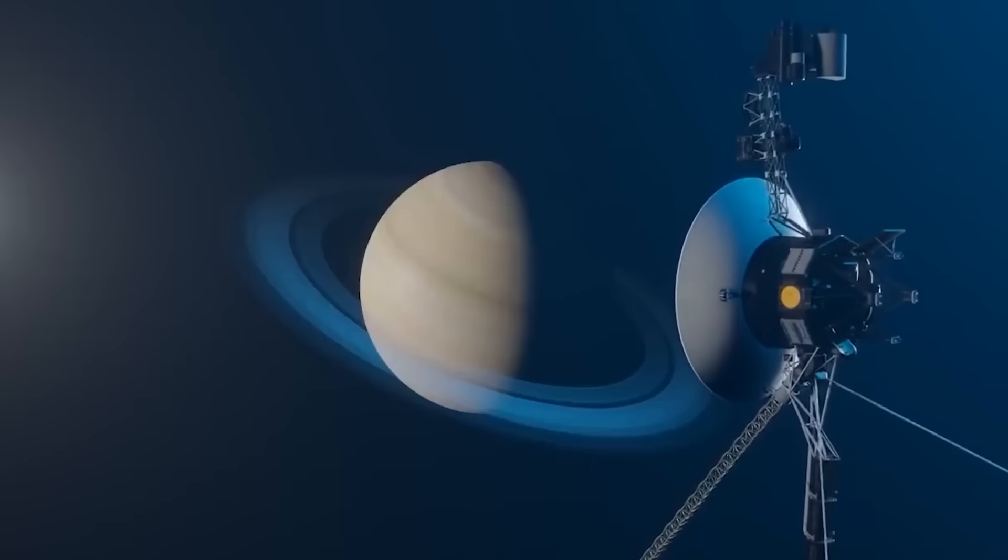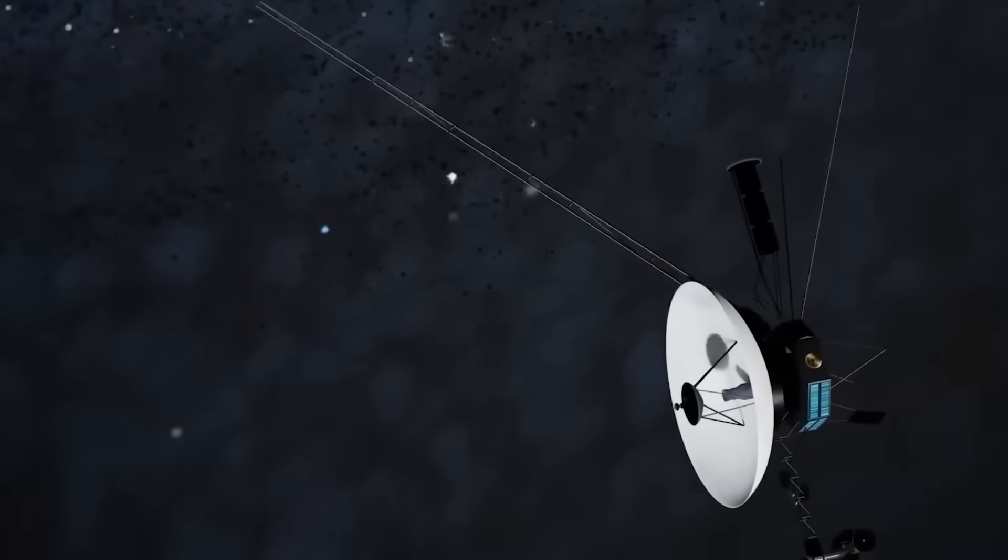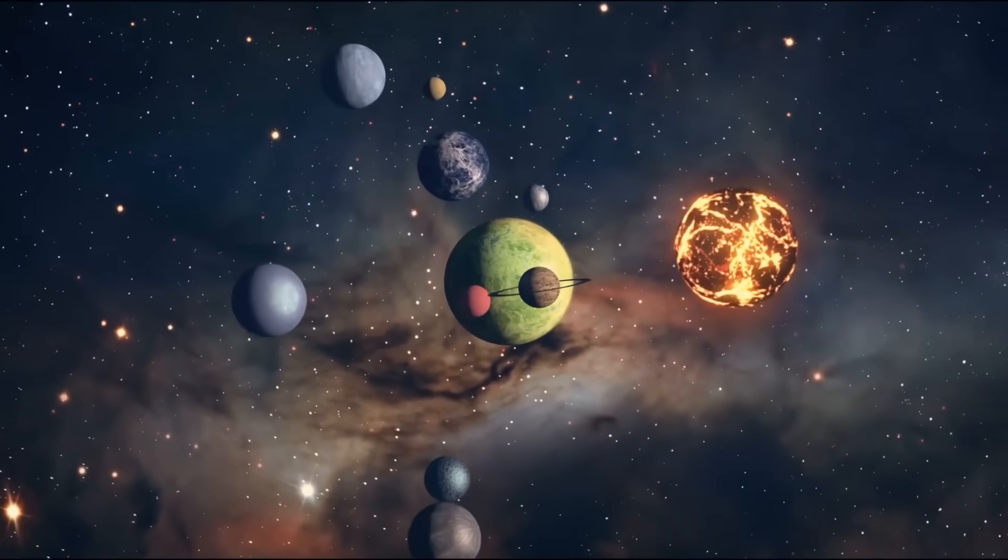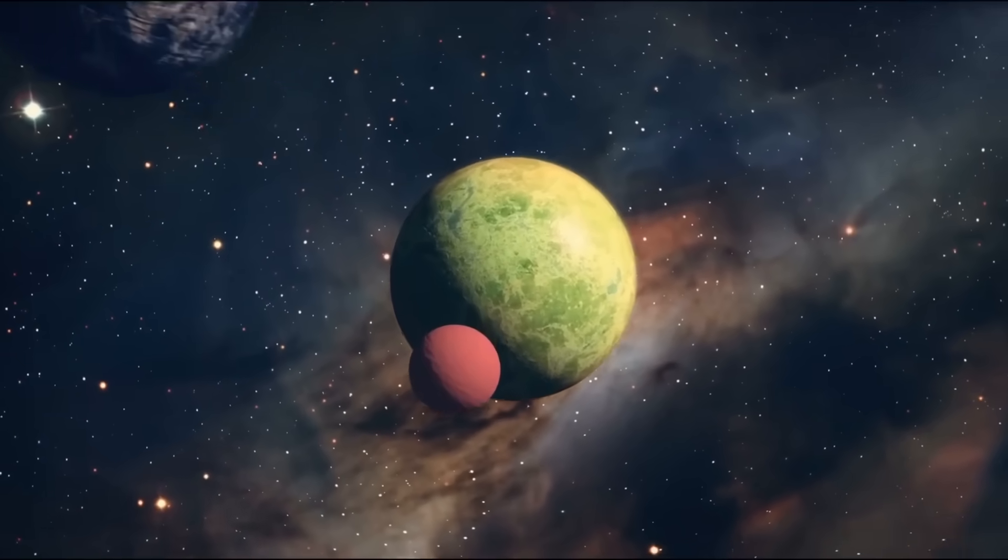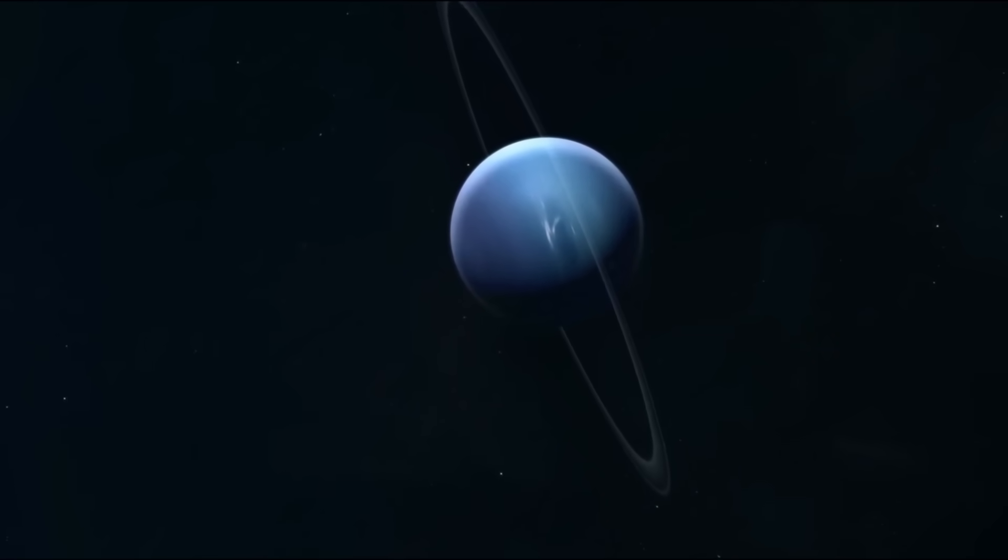Voyager 2 in particular was the first spacecraft to approach Uranus in 1986 and Neptune in 1989, becoming the only probe that visited those planets, surprising scientists with astonishing findings in previously unexplored territories.